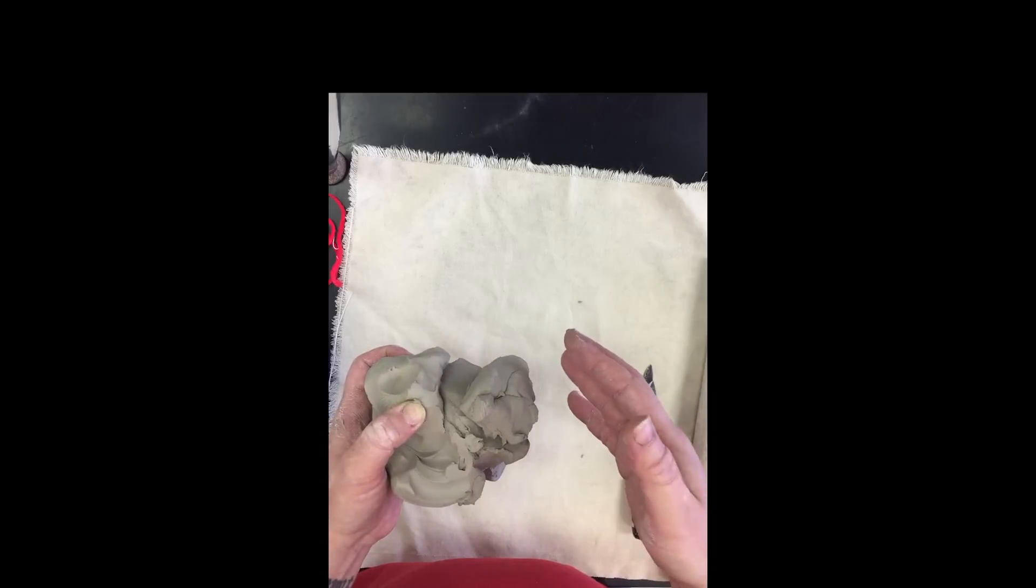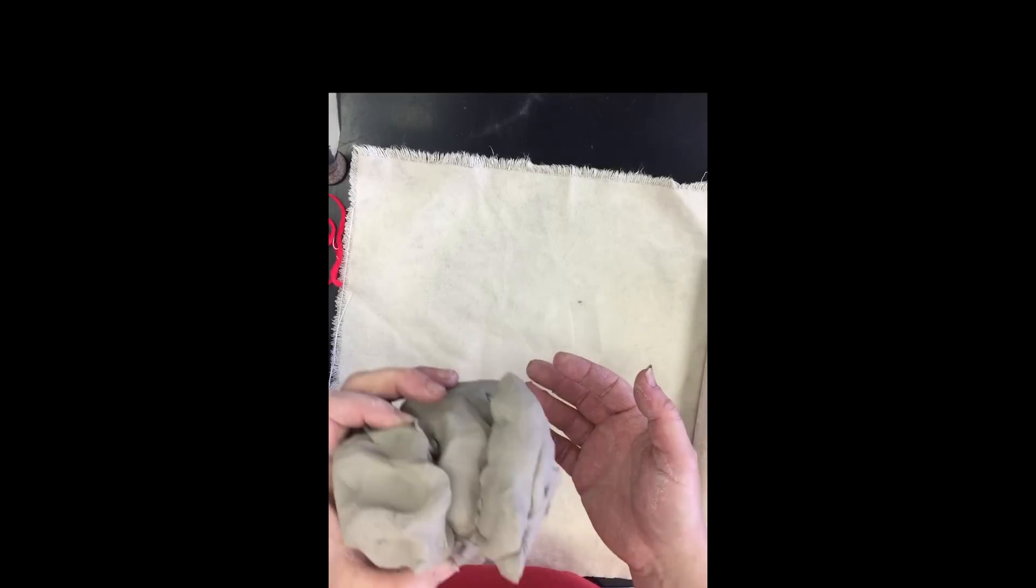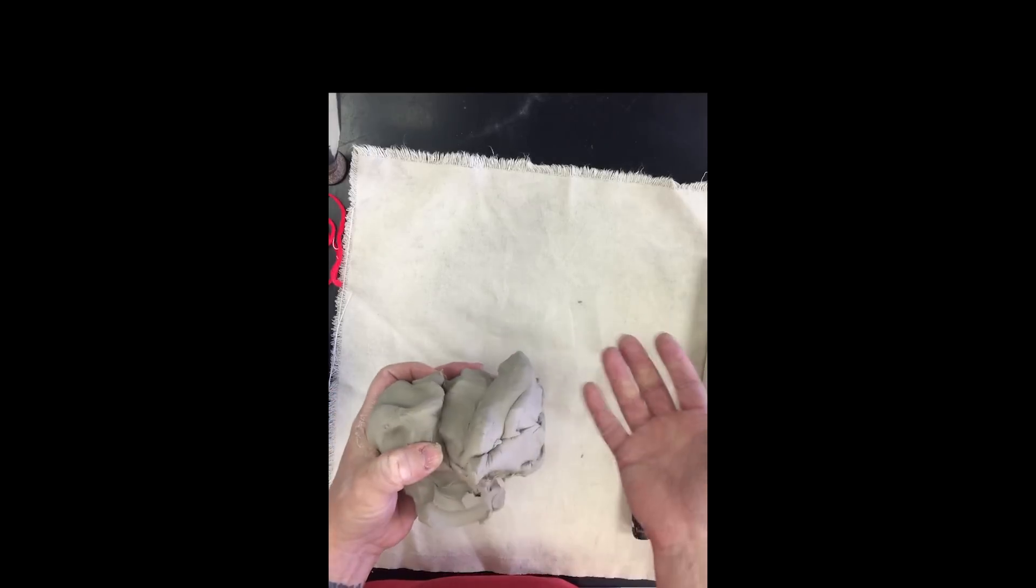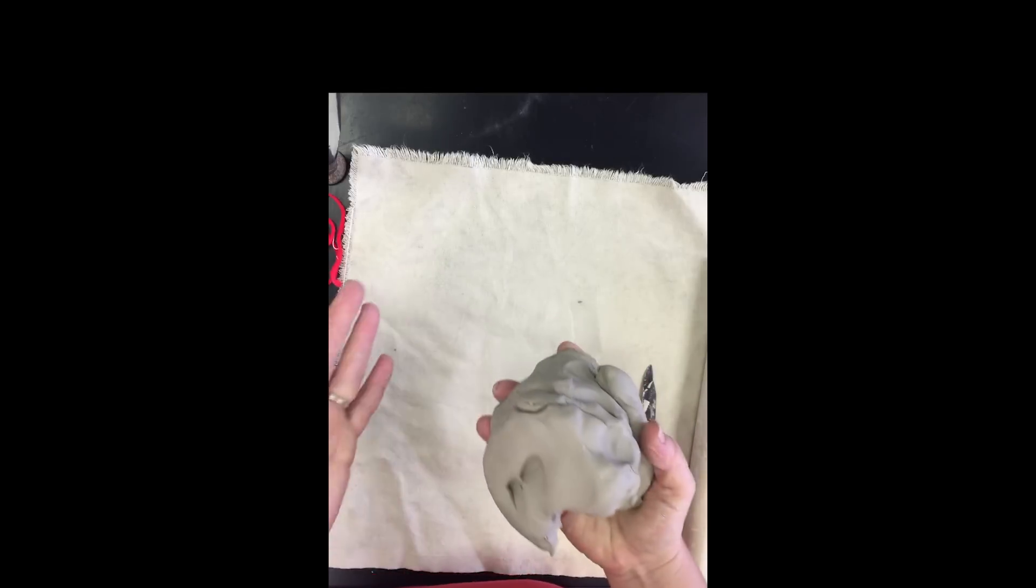If you don't wedge the clay and those air pockets stay in your clay, then you will have an explosion in the kiln because the air wants to escape from your sculpture. And if it doesn't have a way of getting out, then we run into problems. So I'm going to teach you how to wedge.